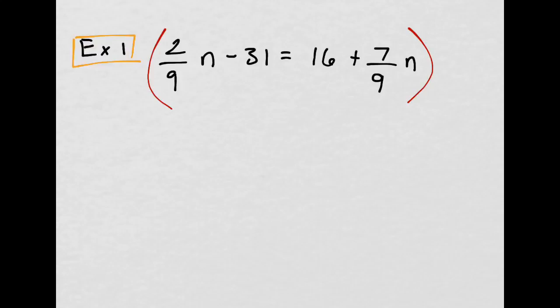That's the first step, multiply everything by the common denominator of 9, and I'm going to distribute that to all of my four terms here.